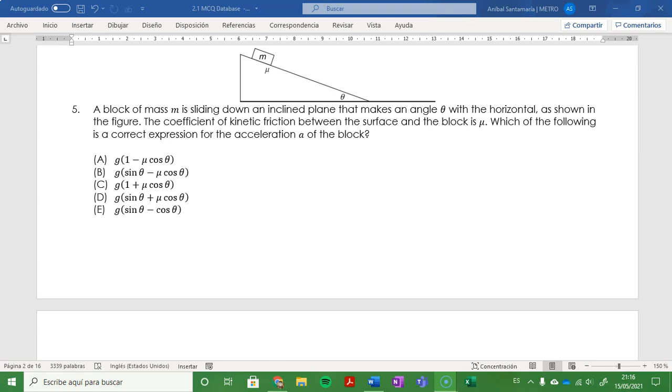Number five: A block of mass m is sliding down an inclined plane that makes an angle theta with the horizontal, as shown in the figure. The coefficient of kinetic friction between the surface and the block is mu. Which of the following is a correct expression for the acceleration of the block?